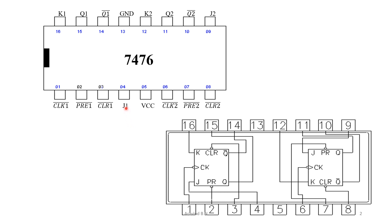The first JK flip-flop has J1, K1, Q1, Q1 bar, clock, preset, and clear. The second JK flip-flop has J2, K2, Q2, Q2 bar, clock 2, preset 2, and clear 2. In each of these flip-flops, we have to observe that the clock, preset, and clear are all active low.